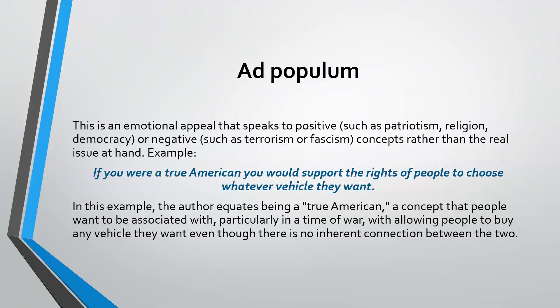Ad populum is an emotional appeal — really pathos. It speaks to positive things like patriotism, religion, and democracy, or to negative visceral things such as terrorism or fascism. For example: if you were a true American, you would support the rights of people to choose whatever vehicle they want.